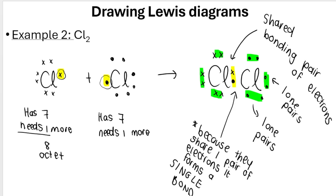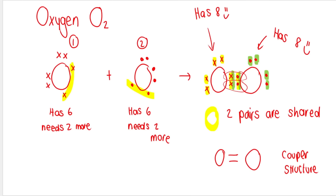For O2: oxygen has six valence electrons and needs two more; the second oxygen also has six and needs two more. Each oxygen circles two unpaired electrons to share. The shared ones go to the middle — two pairs are shared, so it forms a double bond. Counting the electrons for the left oxygen: it now has eight, and the same is true for the right oxygen. They've each reached octet structure.